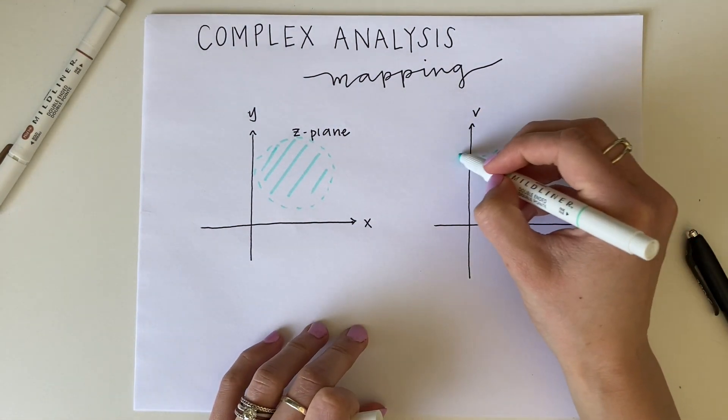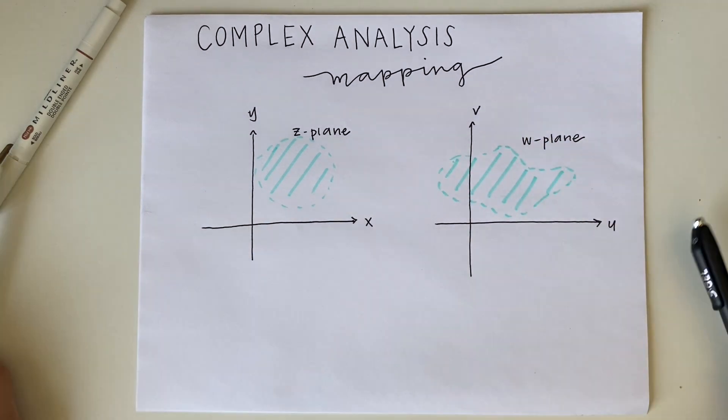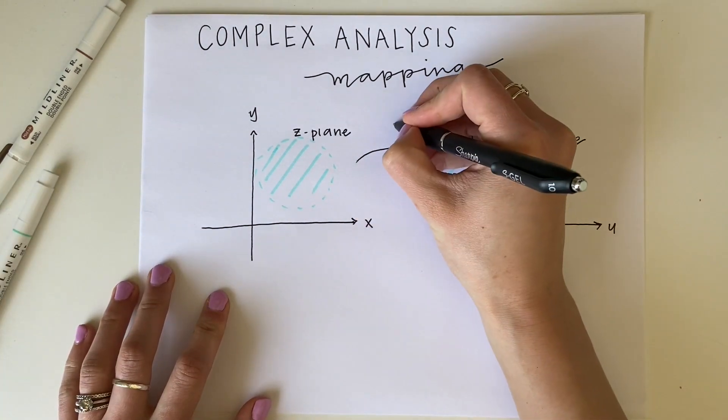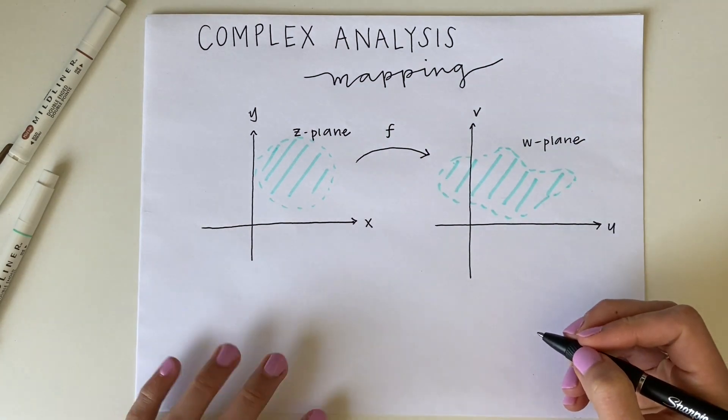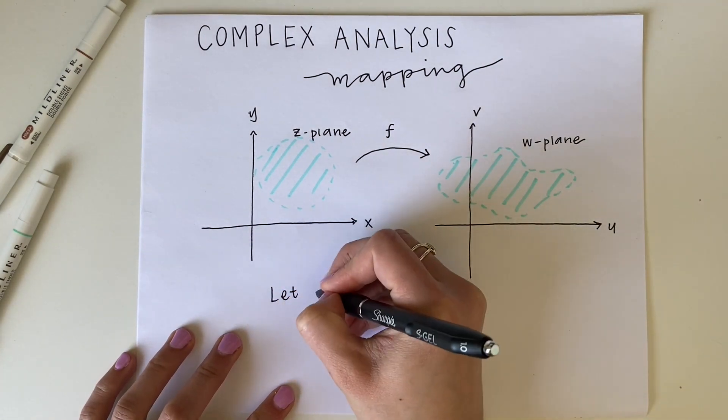We can take a region of the complex plane and map every point of that region into another region in the complex plane. This change of shape will help describe how the function behaves.